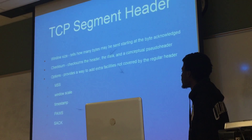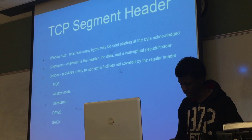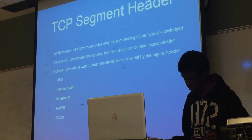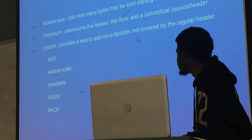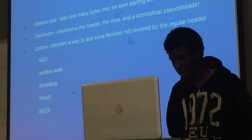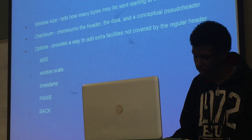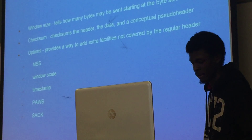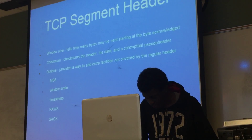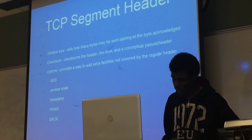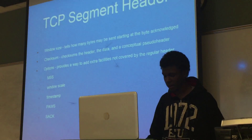Then we have the options field, which provides a way to add extra facilities not covered by the regular header. Some of those include: maximum segment size, which specifies the maximum segment size; window scale, which allows senders and receivers to negotiate how big the window size field's scale factor is; and a timestamp option, which allows timestamps to be sent with every packet. This is used to track round trip time and further track packet loss.